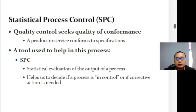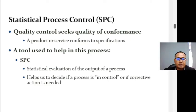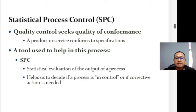Quality control is concerned with the quality of conformance of a process — does the output of a process conform to the intent of the design? Variation in a characteristic of process output provides the rationale for process control. Statistical Process Control, or SPC, is used to evaluate process output to determine if a process is in control or if corrective action is needed.